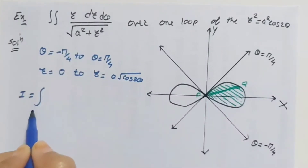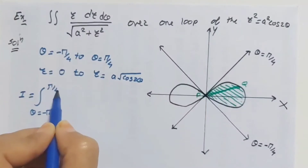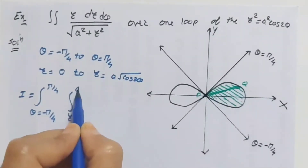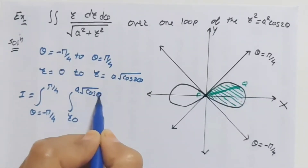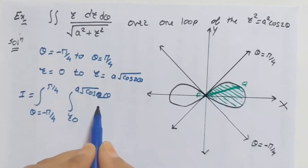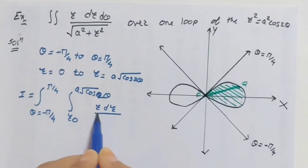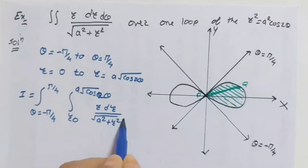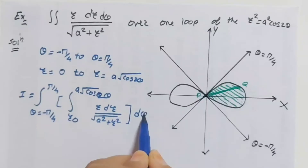The given integral is: I equals the integral from θ=−π/4 to π/4, and r from 0 to a√(cos2θ), of the function r divided by the square root of a squared plus r squared, dr dθ. We first integrate with respect to r, then with respect to θ.